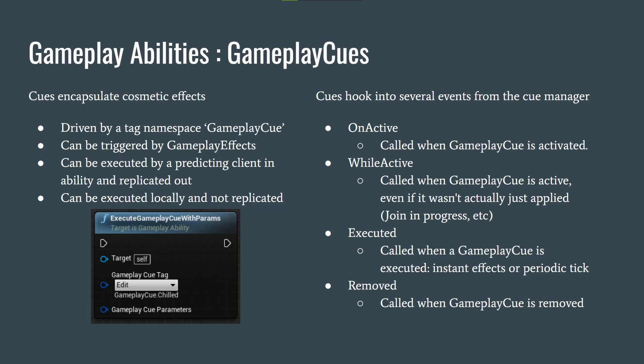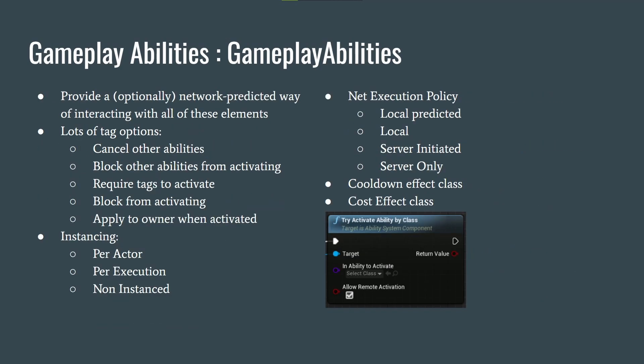Gameplay Abilities are the workhorse of the system. They provide a network-predictive way — optionally, since you can make a completely non-networked game — of interacting with all elements: attribute sets, effects, and gameplay cues. There are many tag options: cancel other abilities, block other abilities from activating, require specific tags to activate, apply a tag to the owner when activated. That tag applied to the owner is how we track which abilities are currently active.